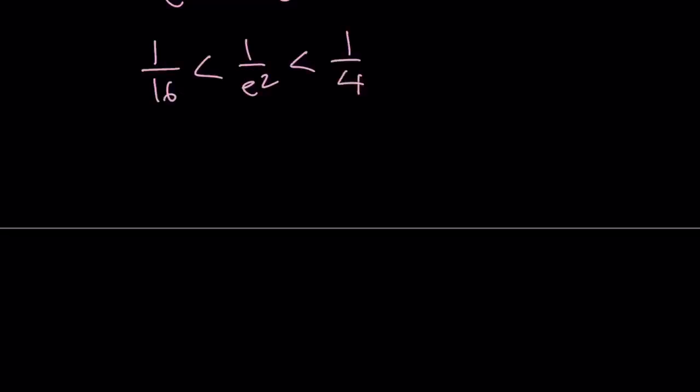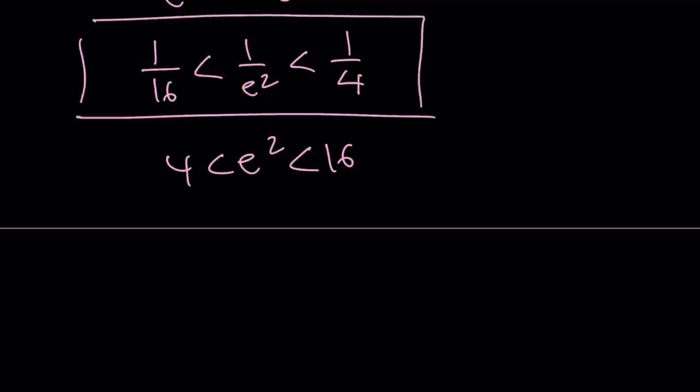Why? Because e squared is between 4 and 16. How do I know that? Well, you can kind of square 2.7, and you're going to notice it's 7 something, right? Okay, great. So, that means that between the two roots, we have our minimum point, and here's the graph.